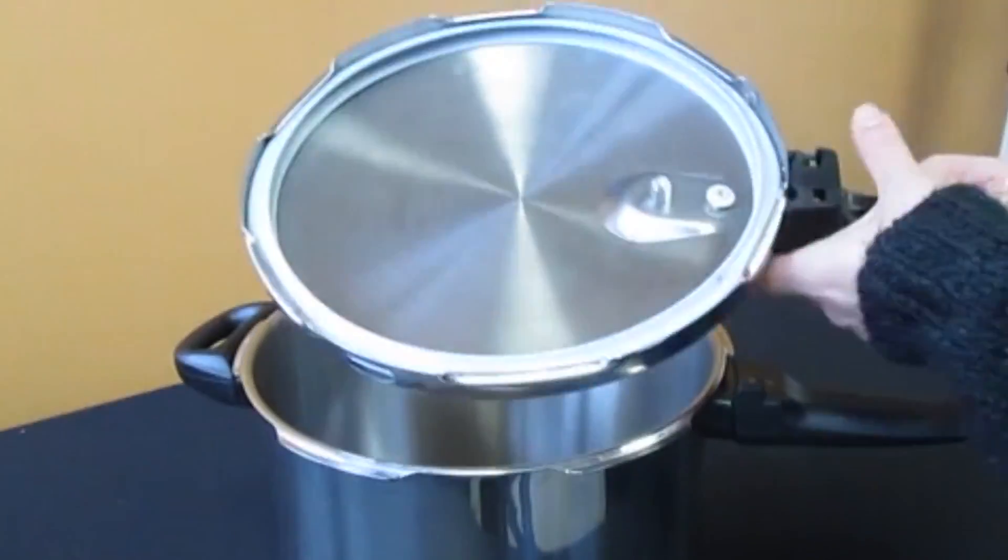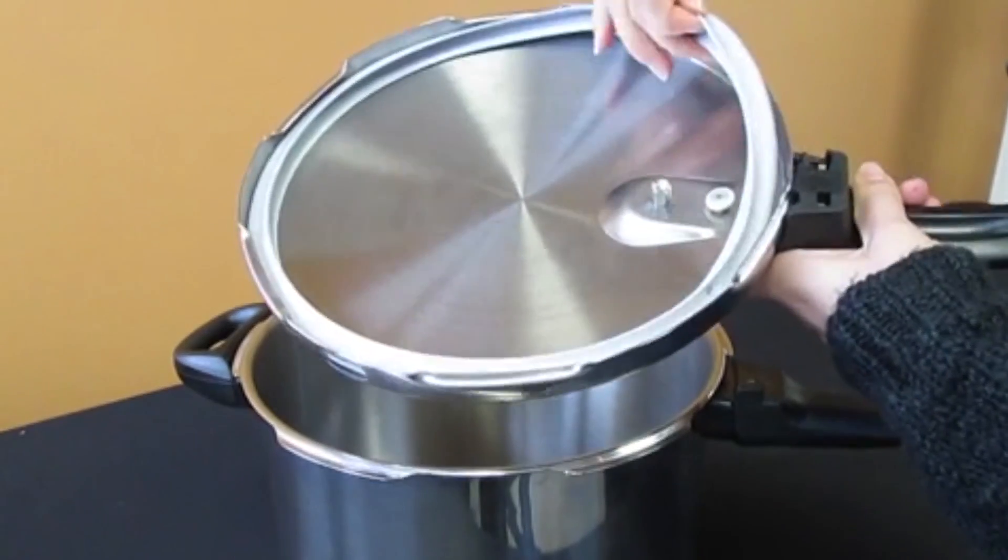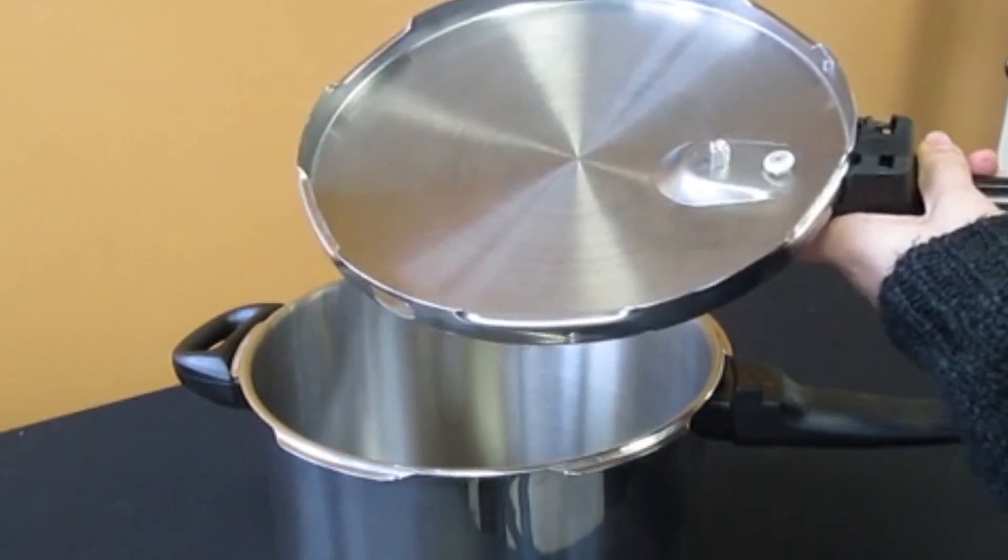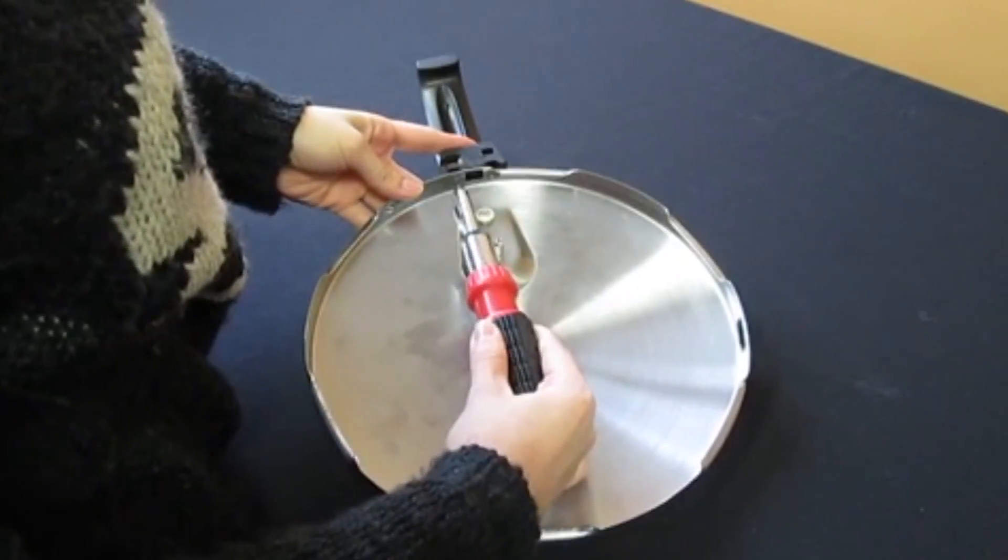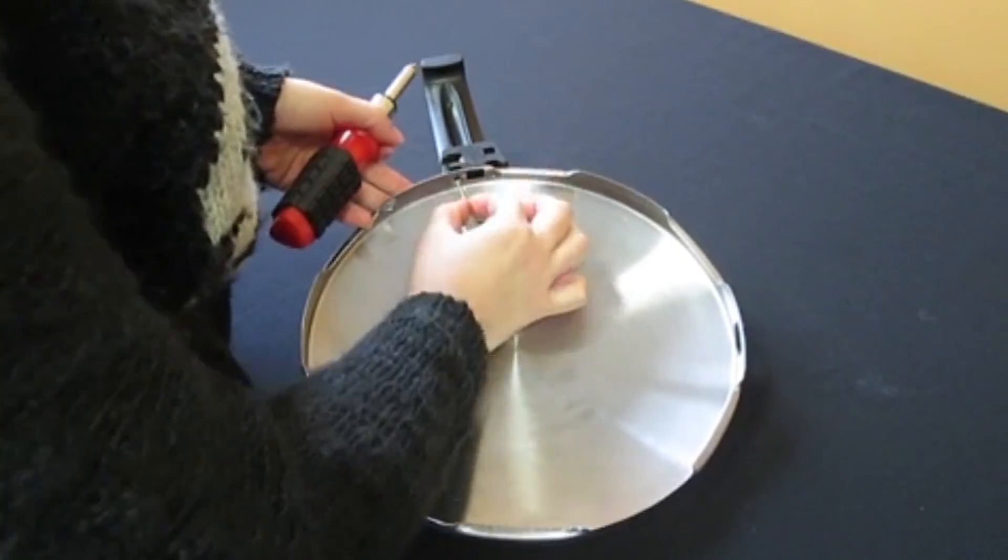Turn the lid upside down and remove the grey silicone gasket. Once the silicone gasket has been removed, take a Phillips screwdriver and remove the two screws from the stainless steel portion of the lid.